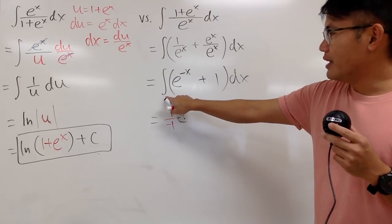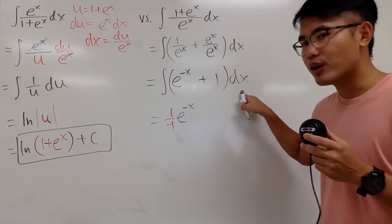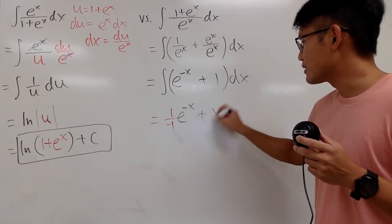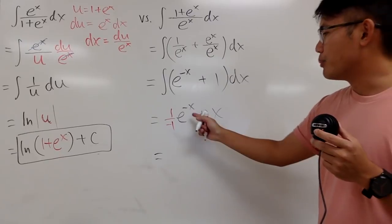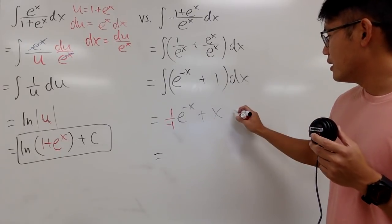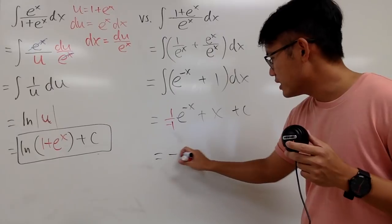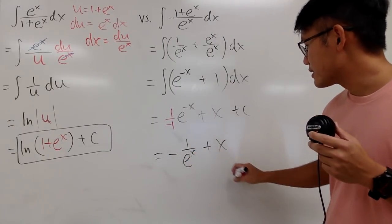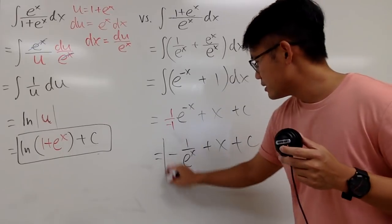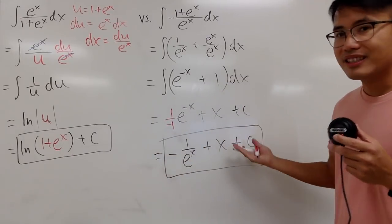And we also have to integrate 1 in the x world, and that's just x. And we're pretty much done. And if you guys would like, you can put this down to the denominator. So I will put this as negative 1 over e^x, and then plus x. And then we are done. Plus C. That's it.